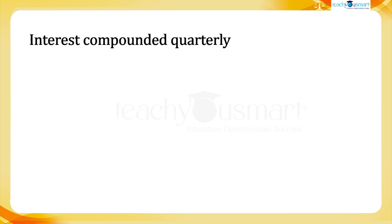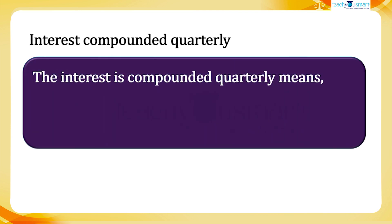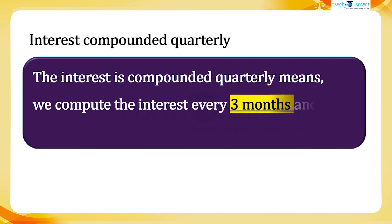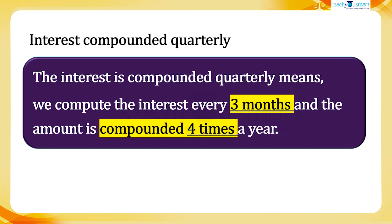What does interest compounded quarterly mean? The interest compounded quarterly means we compute the interest every three months and the amount is compounded four times a year.